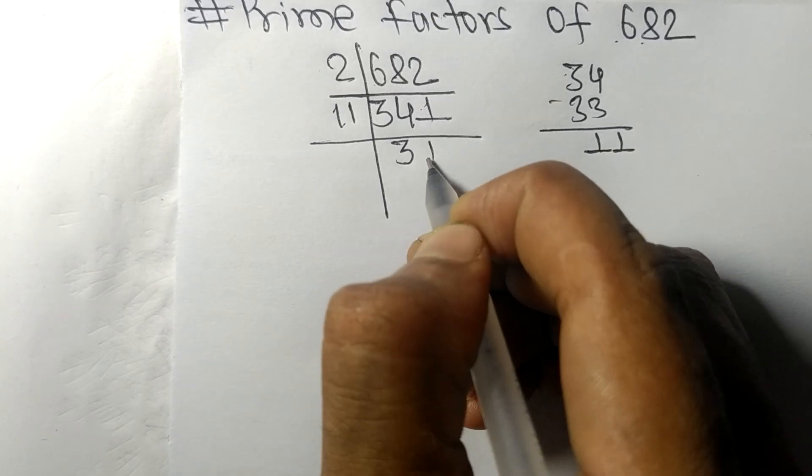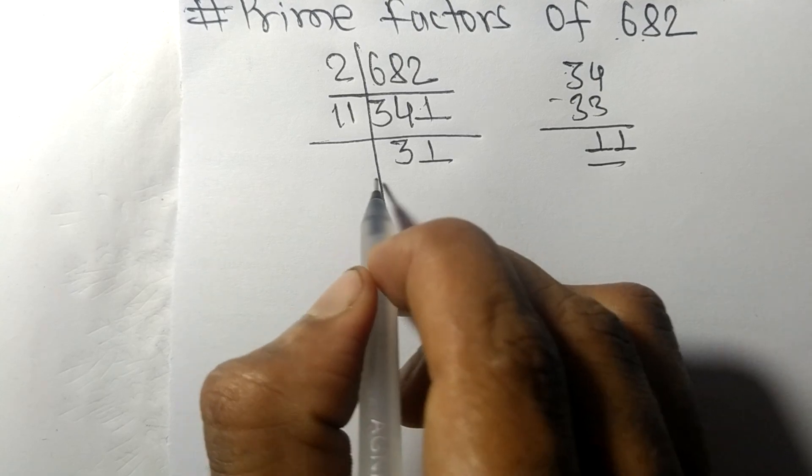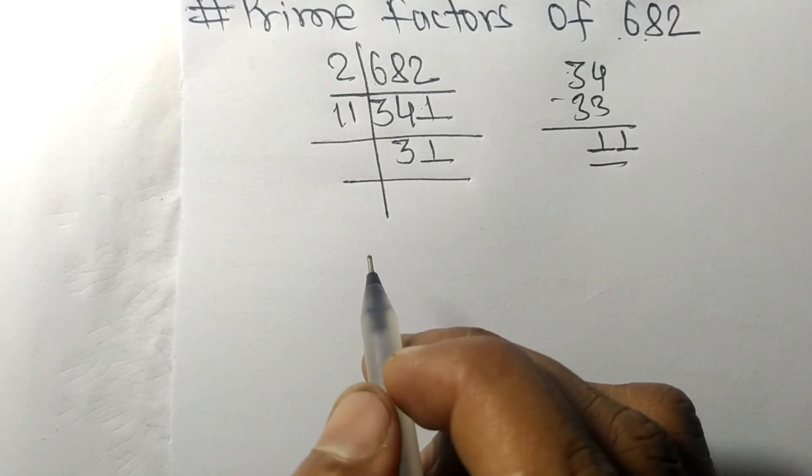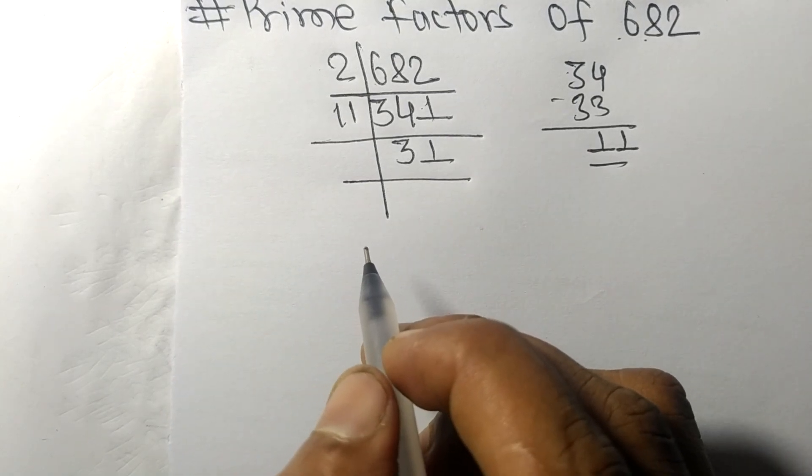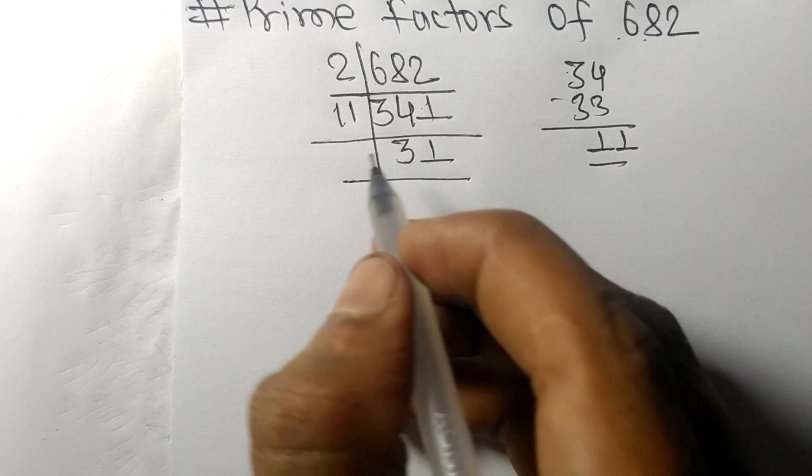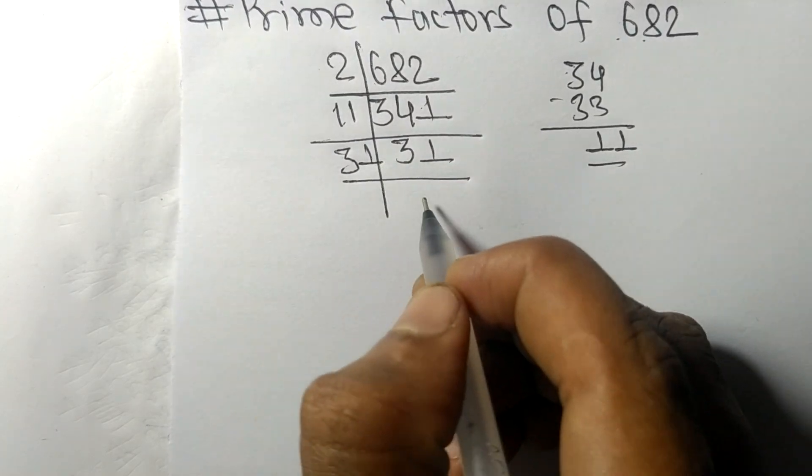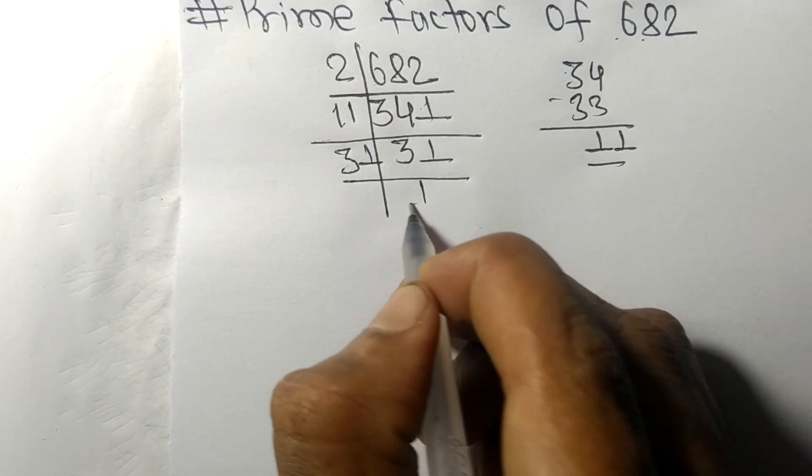So now we got 31 which is our prime number, so it is divisible by thirty-one itself and we get here one.